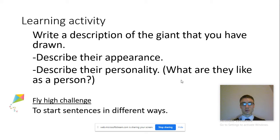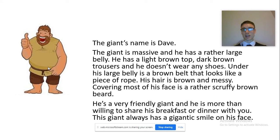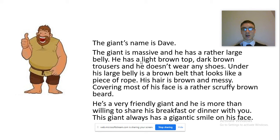I've done an example on the next page — I've even come up with a name for my giant. I'll just read it to you. 'The giant's name is Dave.' Now notice that has a capital letter and a full stop, and Dave has a capital letter because it's the name of the person. 'The giant is massive and he has a rather large belly. He has a light brown top, dark brown trousers, and he doesn't wear any shoes.' You can see I did a list of three things there, with a comma after the first item, and an 'and' before the final thing.